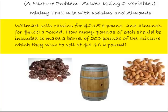Here's a problem. Walmart sells raisins for $2.15 a pound and almonds for $6 a pound. How many pounds of each should be included to make a barrel of 200 pounds of the mixture, which they sell at $4.46 a pound? So we want to make a mixture of 200 pounds, sell it at $4.46 a pound.